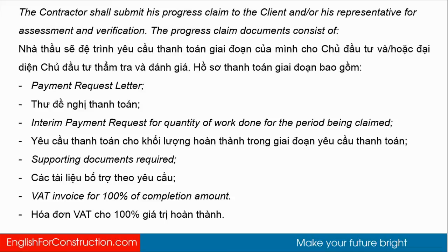The progress claim documents consist of: a payment request letter, interim payment request for quality of work done for the period being claimed, supporting documents required, and a VAT invoice for 100% of the completion amount.